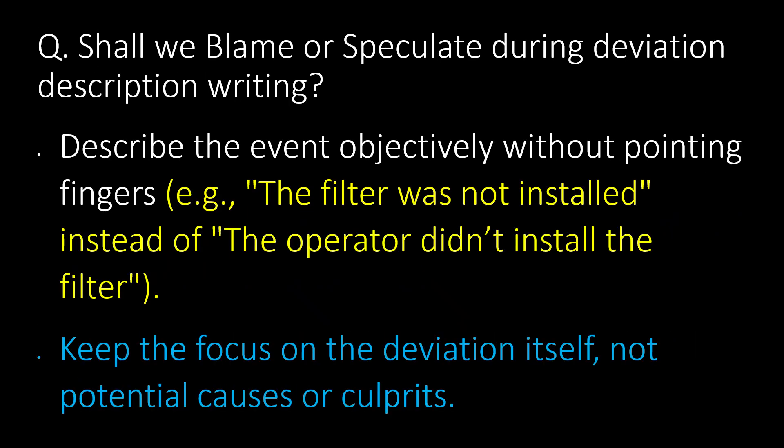Should we blame or speculate during deviation description writing? Describe the event objectively without pointing fingers. For example, write 'the filter was not installed' instead of 'the operator didn't install the filter.' Keep the focus on the deviation itself, not on potential causes or culprits.